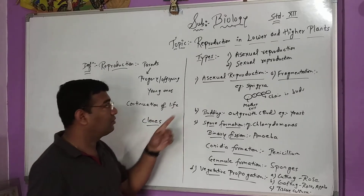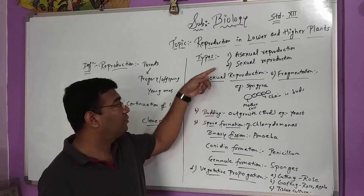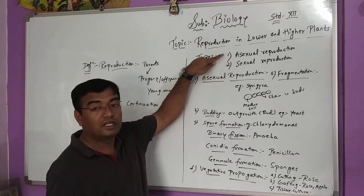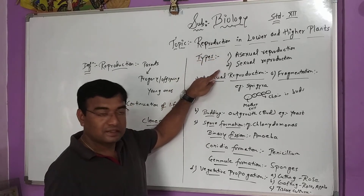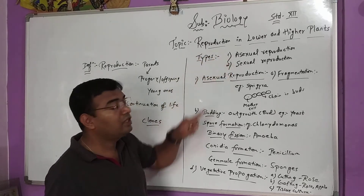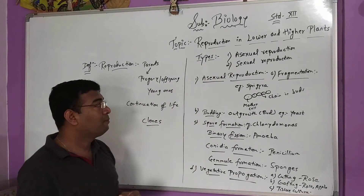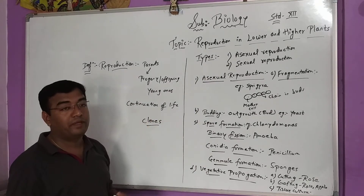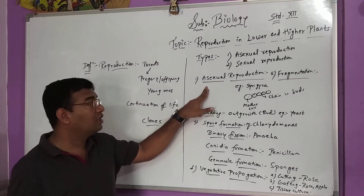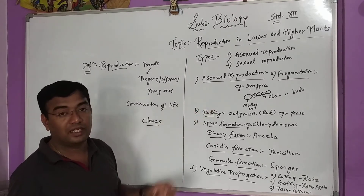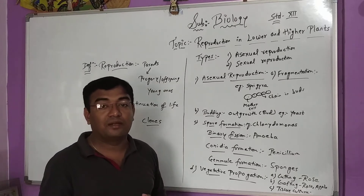Let us see the types of reproduction. There are two different kinds of reproduction: one is asexual reproduction and the second is sexual reproduction. What do we mean by asexual reproduction? In board exams, they often ask for a short note on asexual reproduction. Asexual reproduction is reproduction by the involvement of a single parent.